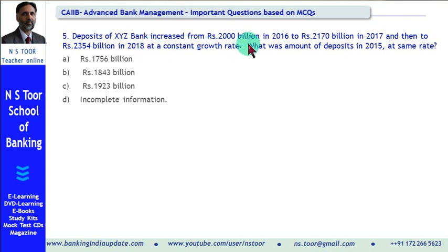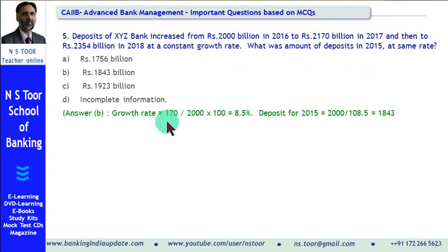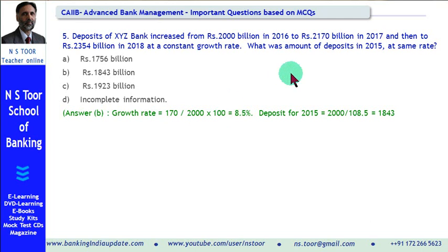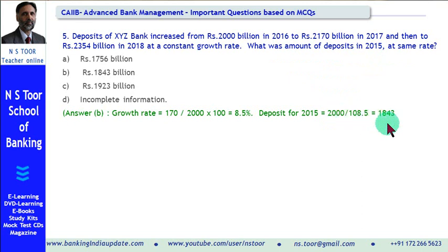To solve this, we first find the constant growth rate. From 2000 billion it increased to 2170 billion — a growth of 170 billion. So the growth rate = 170 divided by 2000 = 8.5%. Using this same rate, we work backwards from 2016: deposit in 2015 = 2000 divided by 1.085 = approximately 1843 billion. So the deposit in 2015 was 1843 billion, and the correct option is B.